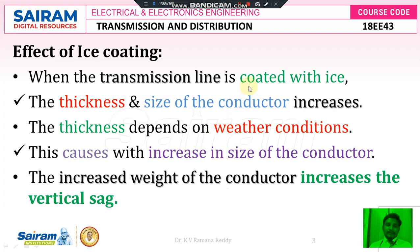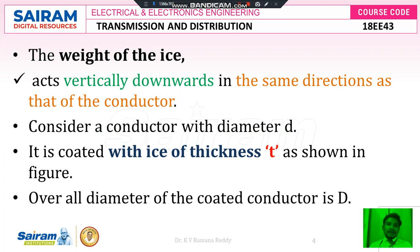Already there is a sag between the two successive poles, and the sag increases because of the weight of ice on the surface area of the conductor for a given length of the transmission line, which is also taken into account as an effect of ice coating. The weight of ice acts vertically downwards in the same direction as that of the conductor, just as the weight of the conductor also acts vertically downward.